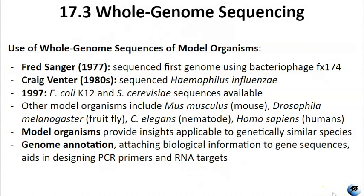Fred Sanger, from Sanger Sequencing, was the first person to sequence a genome — a bacterial virus, bacteriophage φX174, with about 5,400 base pairs. In the 1980s, American biotechnologist and geneticist Craig Venter sequenced the bacteria Haemophilus influenzae. The yeast Saccharomyces cerevisiae was a significant challenge with a very big genome, requiring 74 different labs across the world to collaborate. That was done in 1996, and by 1997 the genomes of E. coli and Saccharomyces were available for researchers. Currently we have the genomes of the mouse, the fruit fly, nematodes, and humans.